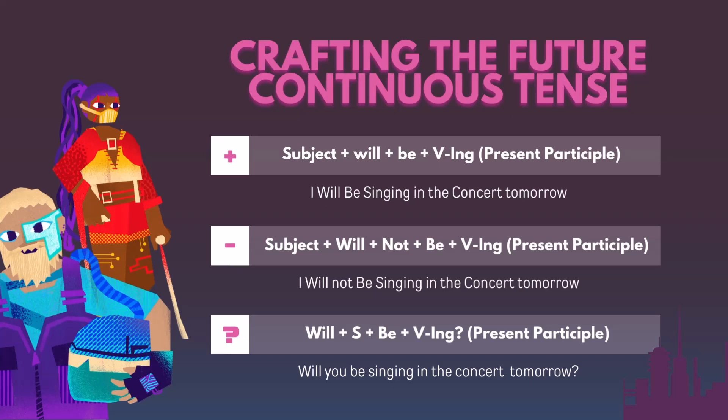Crafting the Future Continuous Tense — Positive Sentences: Subject + will + be + V-ing (present participle). Example: 'I will be singing in the concert tomorrow.'